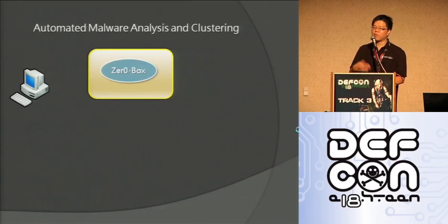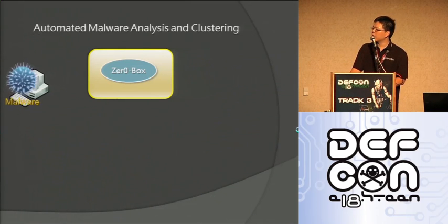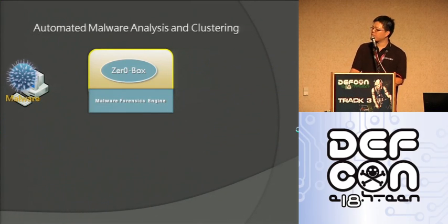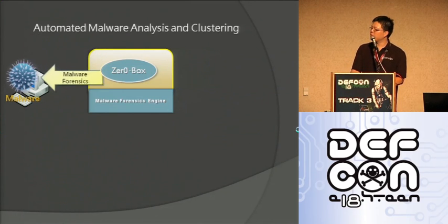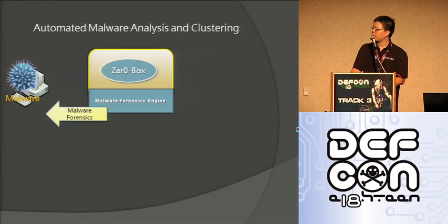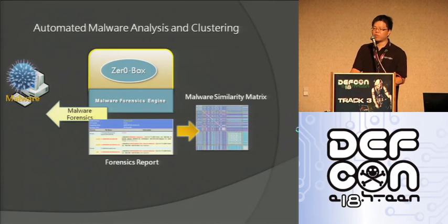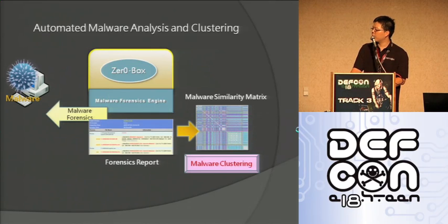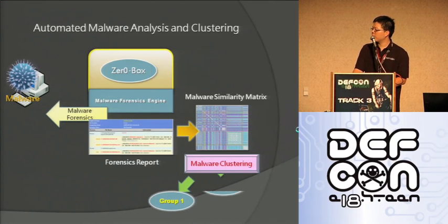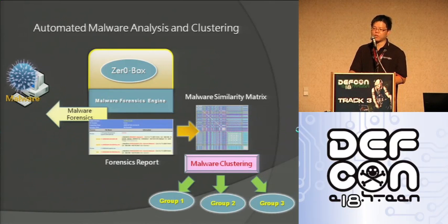We automate this process through our tool called ZeroBox. ZeroBox scans all the malware samples we have, makes them execute, generates a report, builds the similarity matrix, and then performs clustering — grouping the samples into different groups.